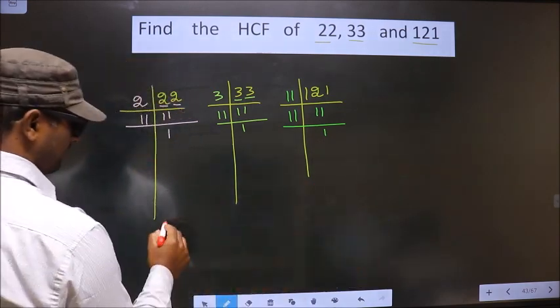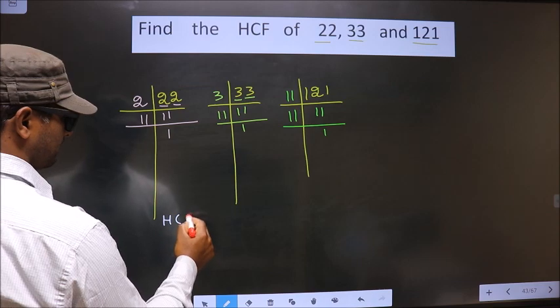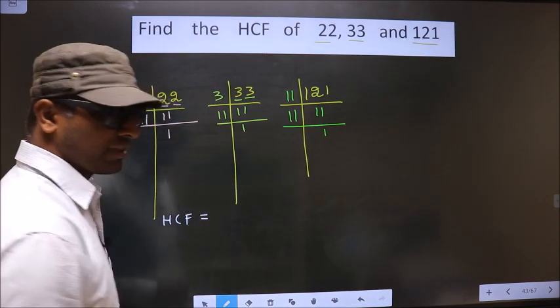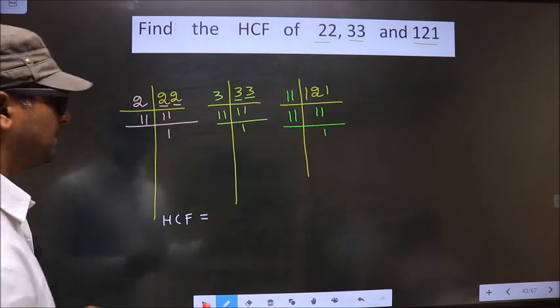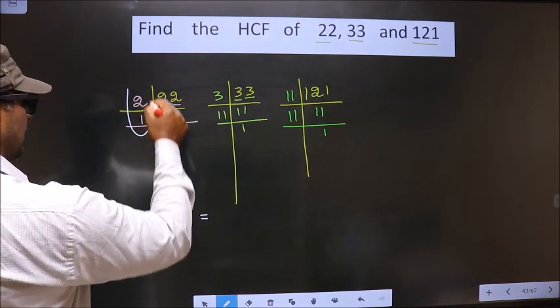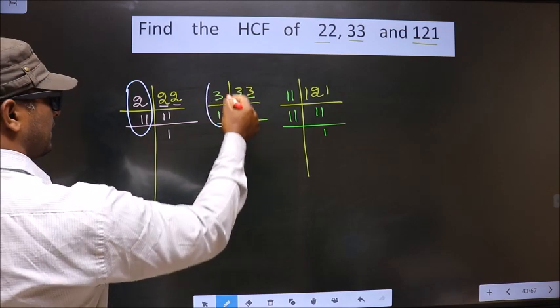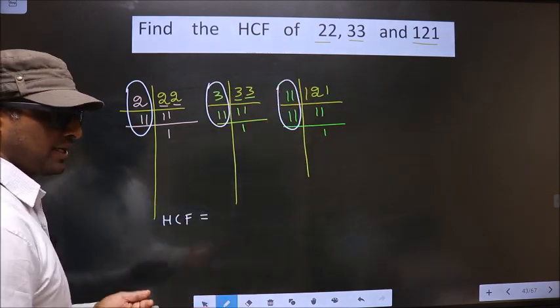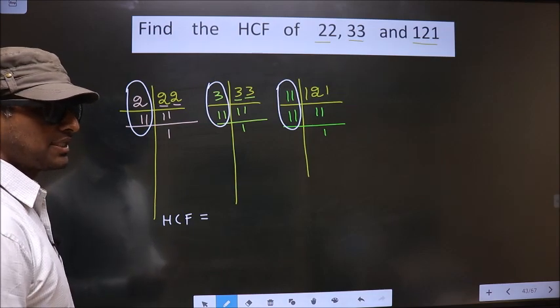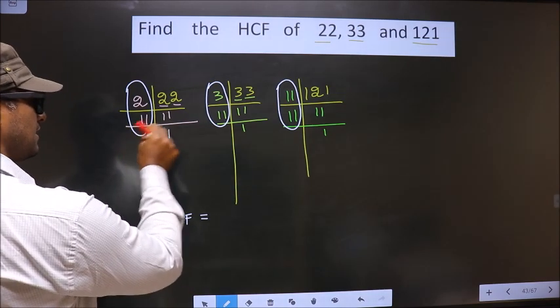So now our HCF is. HCF is the product of numbers that are present here and here and also here. So now we should find the numbers that are present in these 3 places.